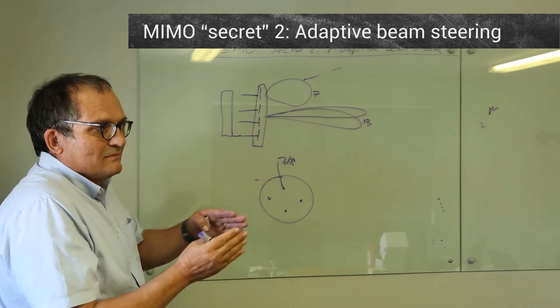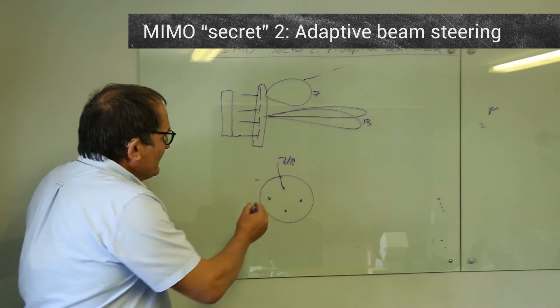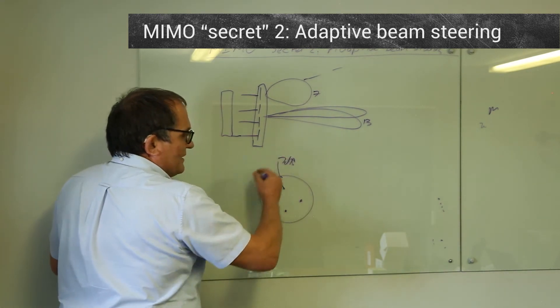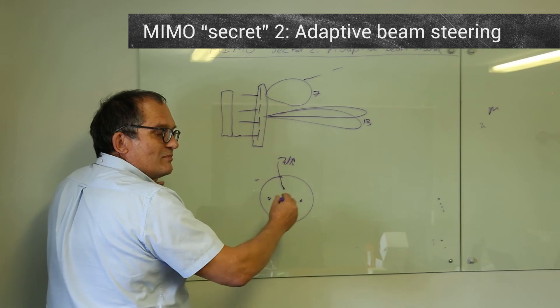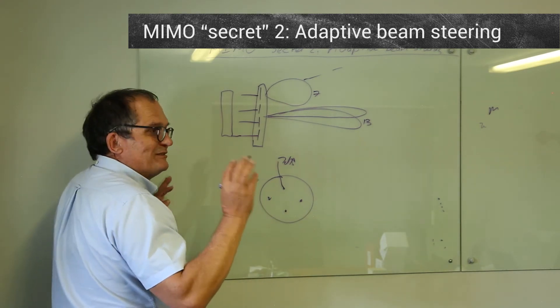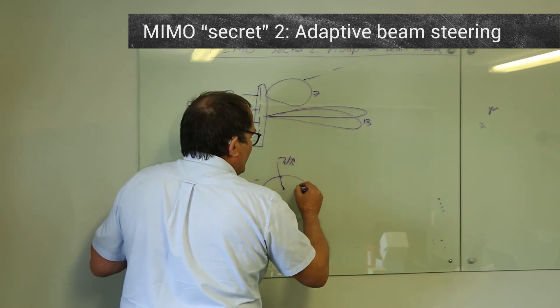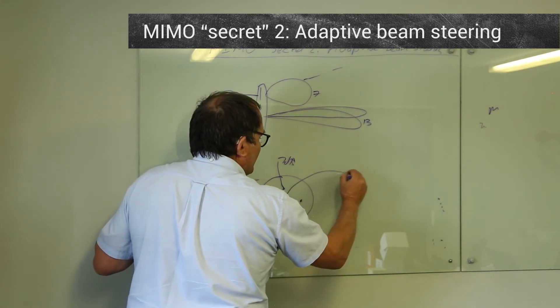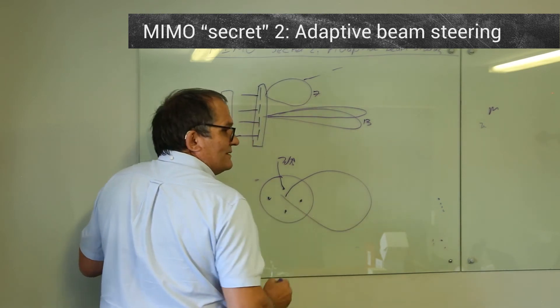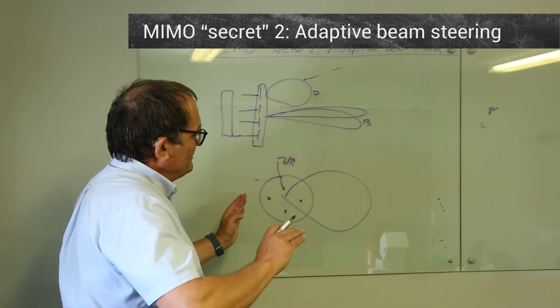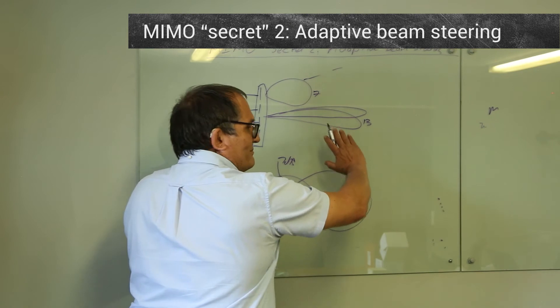Instead of four omni-directional patterns, it can phase these four—I won't explain how—but instead of having omni it can get this pattern towards the base station, and if the boat turns it will steer that pattern.